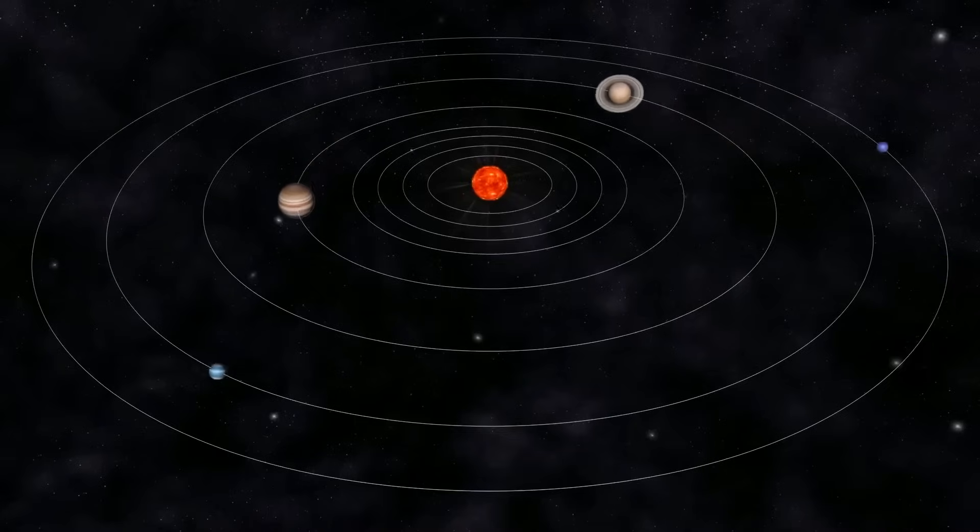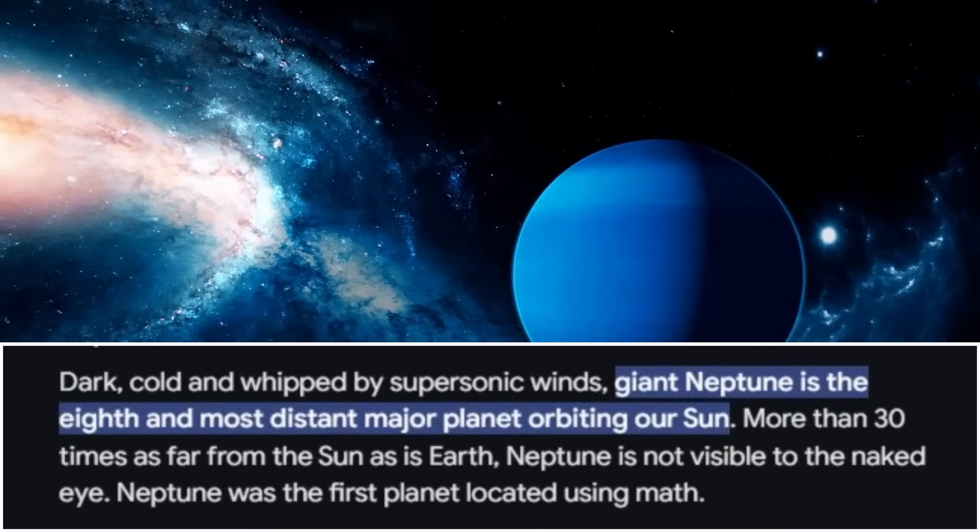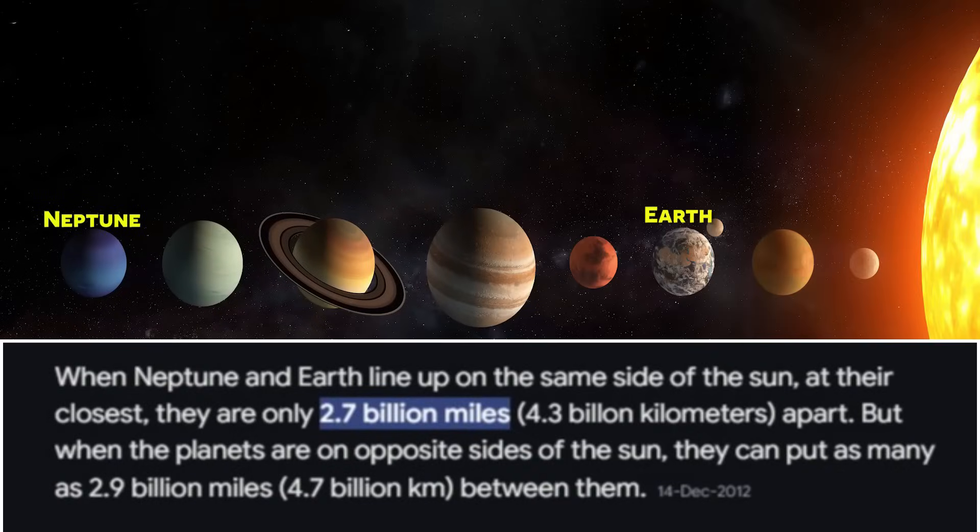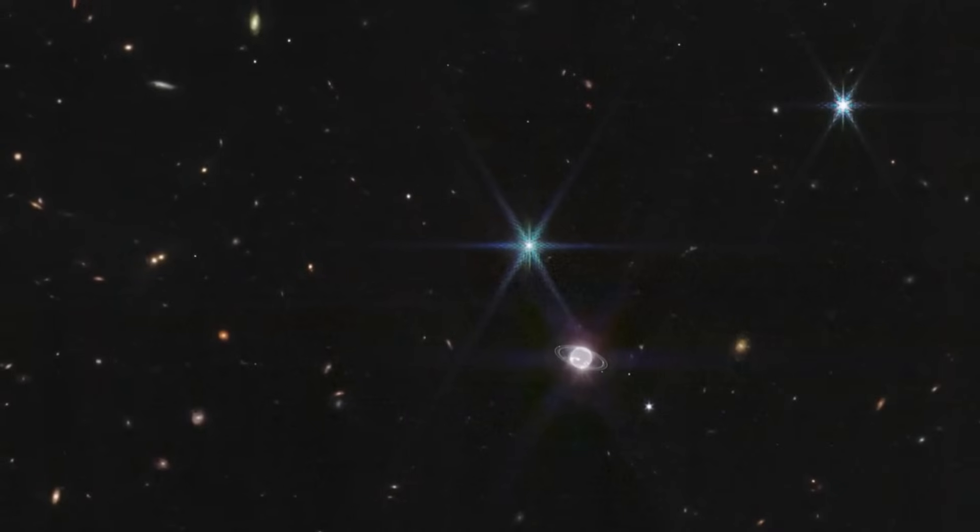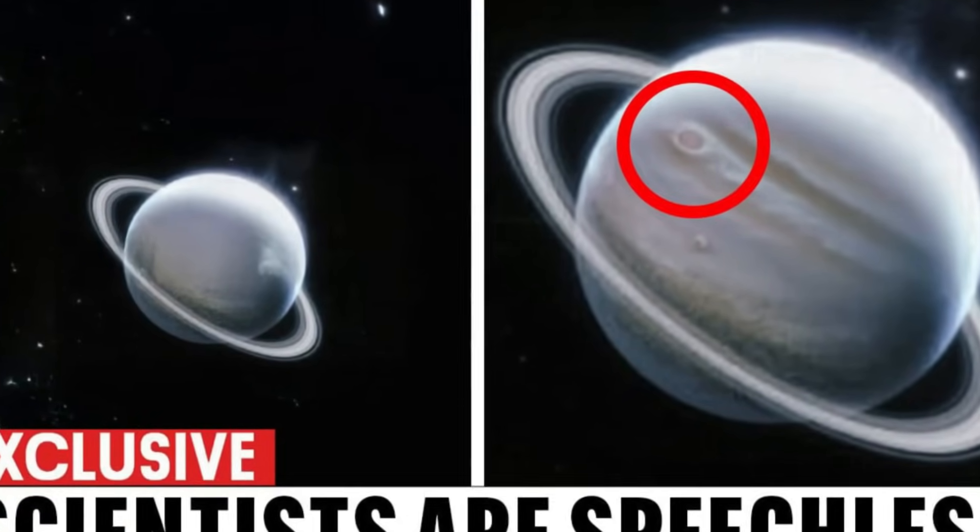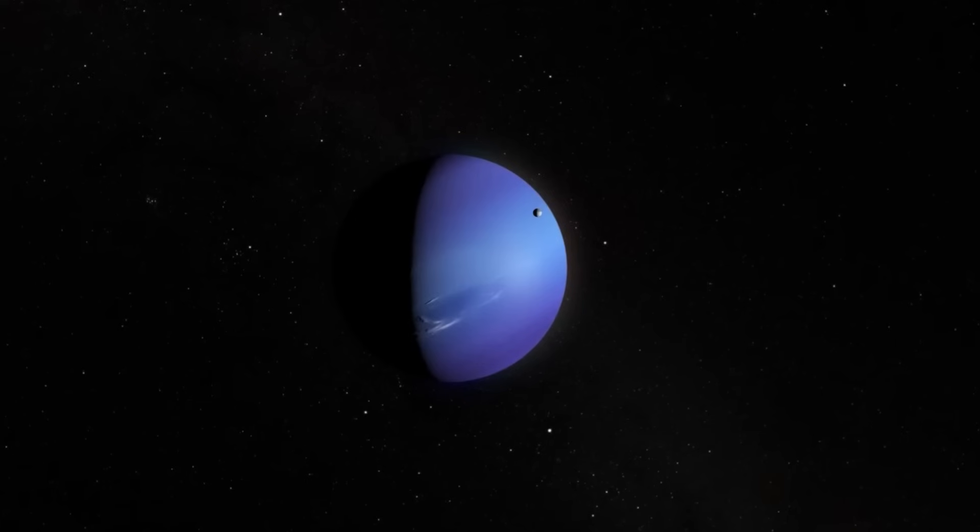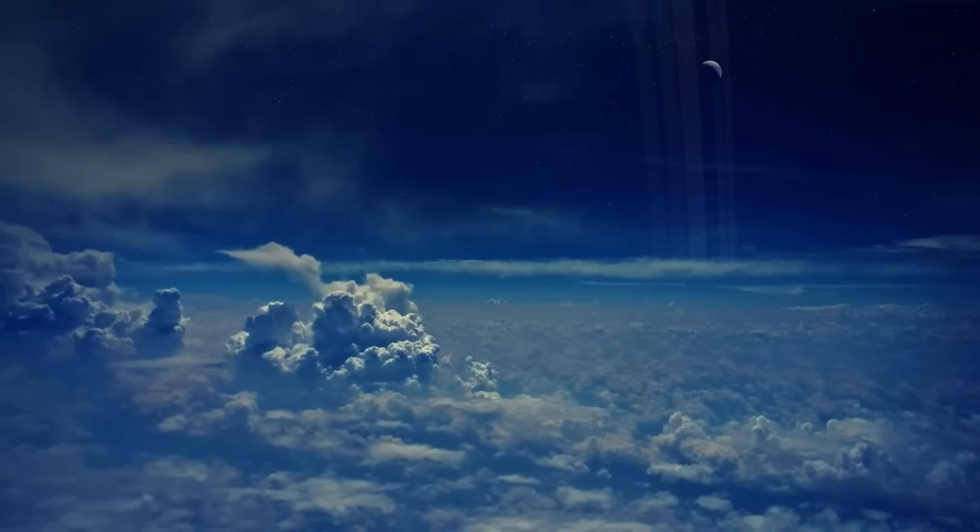Atmospheric Dynamics: Neptune's atmosphere is one of the most active in the solar system, characterized by turbulent weather patterns and extreme winds. The 4K images have captured the intricate details of these phenomena, including the formation and dissipation of methane ice clouds. Scientists have also observed changes in the Great Dark Spot and the emergence of smaller storms, offering clues about the underlying mechanisms driving Neptune's climate.